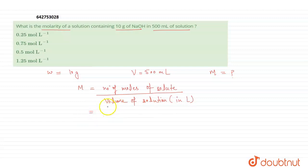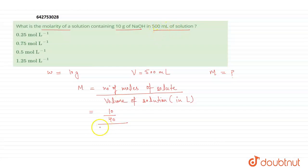The number of moles of solute equals given weight divided by molecular weight. Here the given weight is 10 grams and the molecular weight of NaOH is 40. The volume of solution is 500 ml, and to convert ml into liters we divide by 1000.